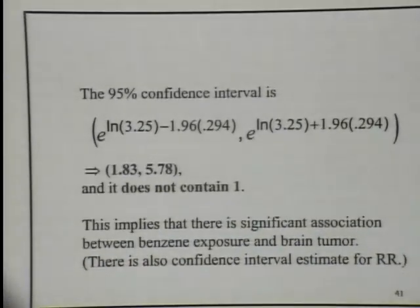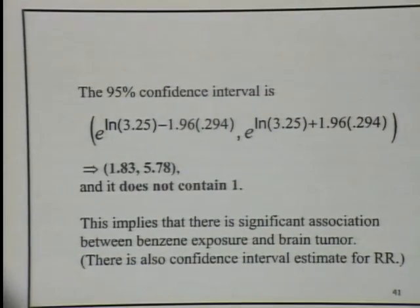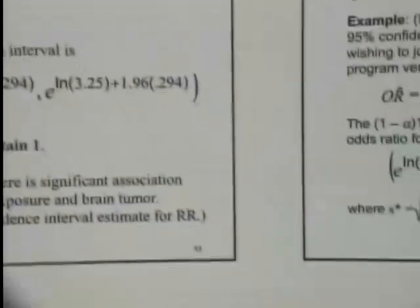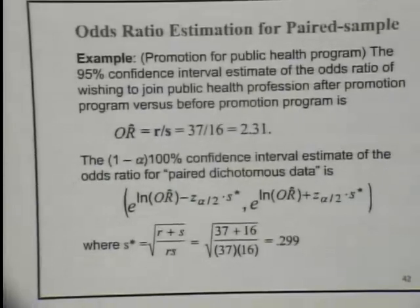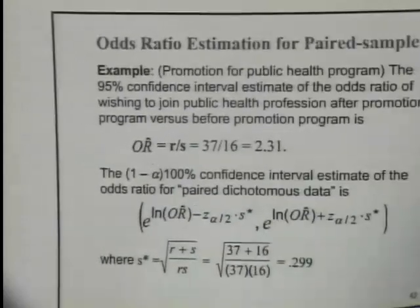For odds ratio, the magic number is 1 — like relative risk. If odds ratio is 1, regardless of whether you're exposed to the risk factor, the outcome is the same. A confidence interval covering numbers greater than 1 means your risk factor is significant. There is also an odds ratio formula for the McNamara problem, just for your reference — I won't test you on that.